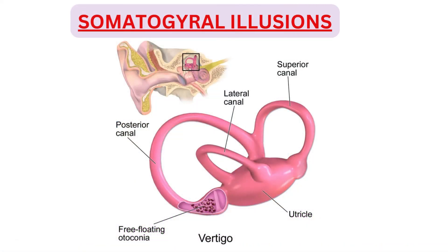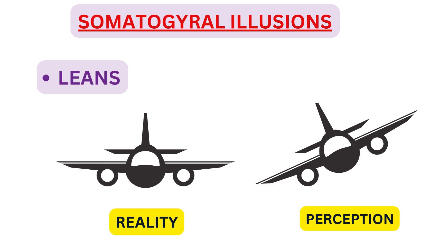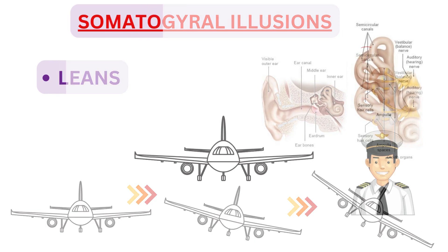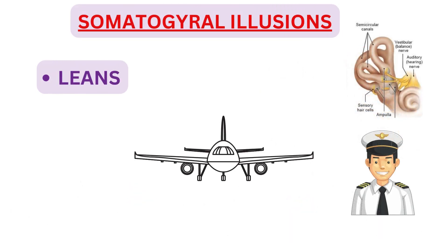SD stimulated by semicircular canals are called somatogyral illusions. The first somatogyral illusion is the LEANS — the most common vestibular illusion, experienced by most pilots in their flying career. It is basically an illusion of bank when one is flying straight and level. For example, suppose a pilot is manually flying an aeroplane with wings level. His attention gets diverted and gradually the aeroplane banks to the left at a slow rate of less than 2 degrees per second. This slow rate of turn is not perceived by the semicircular canal since it is below the sensing threshold. With the left wing low, the pilot feels as if it is wings level.